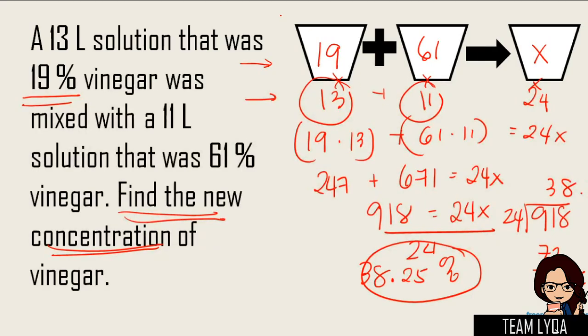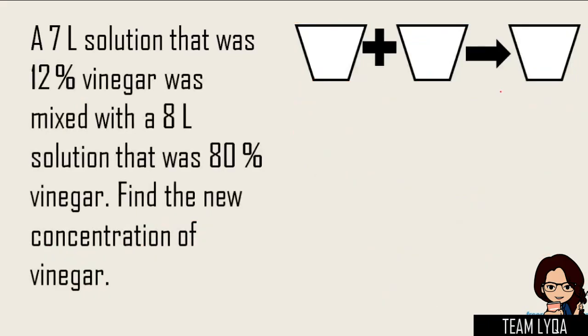All you have to remember is itong drawing na to. You have to remember na may buckets, and then, kumpletuhin mo yung mga yan. Okay? Let's try it one more time. This time, it's a 7-liter solution that was 12% vinegar mixed with a 8-liter solution that was 80% vinegar. Find the new concentration of vinegar. So, here's what you're going to do. If you're watching this on YouTube, I want you to hit pause.